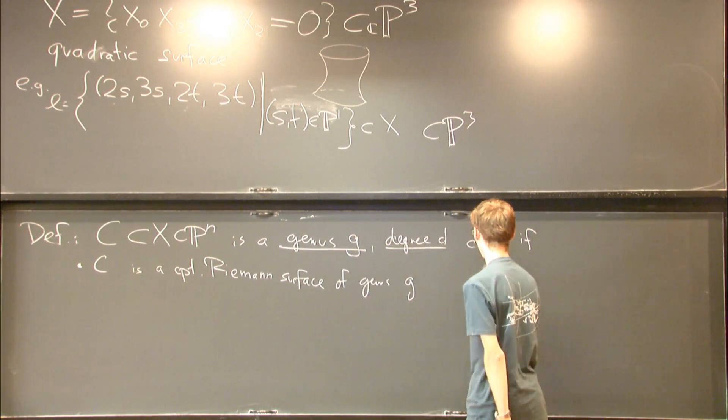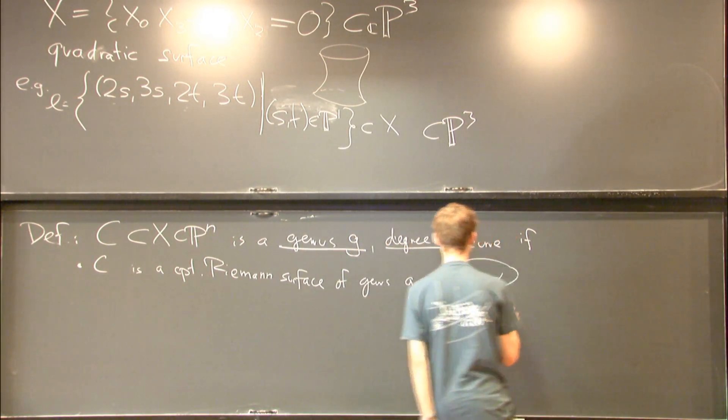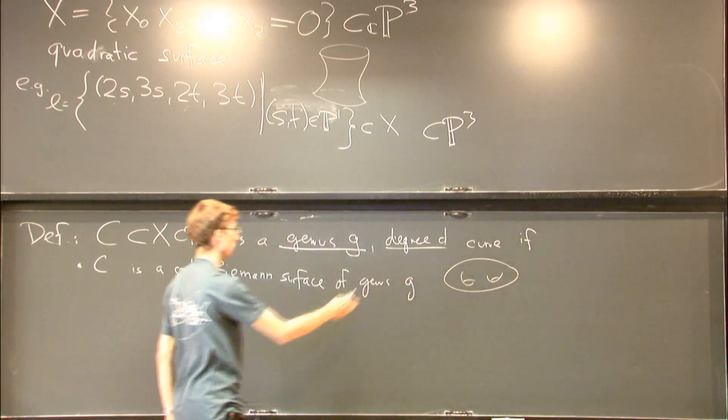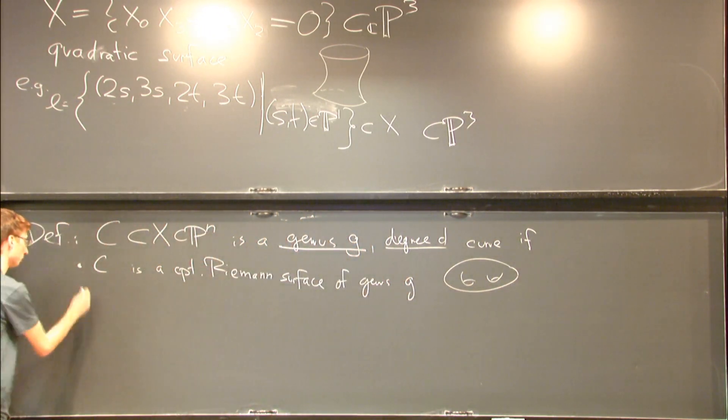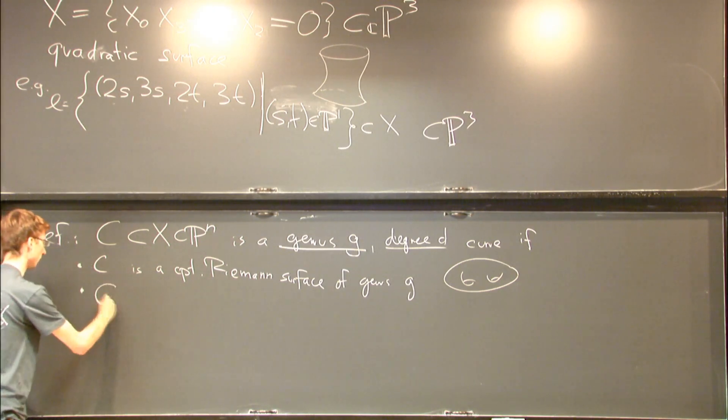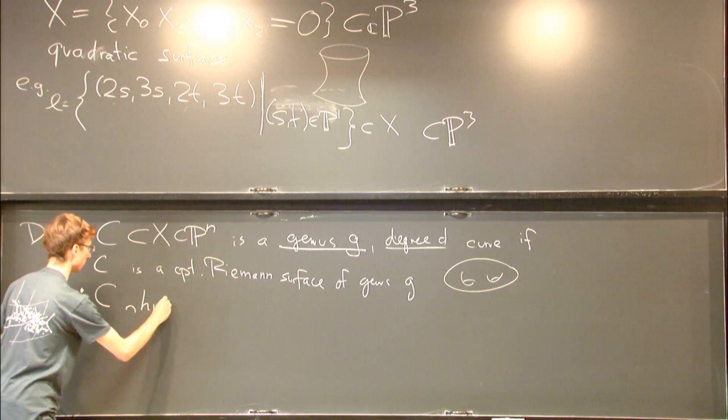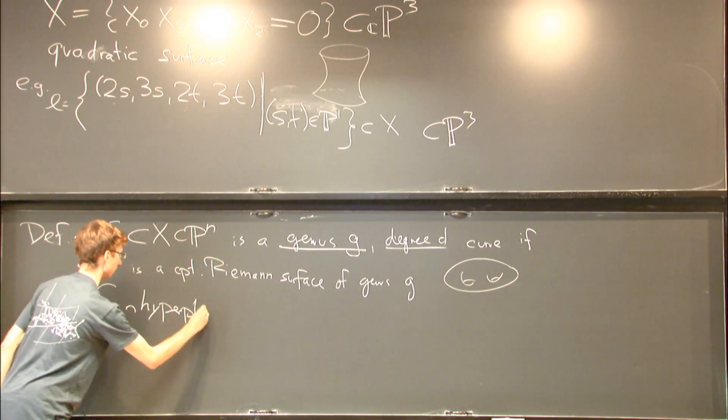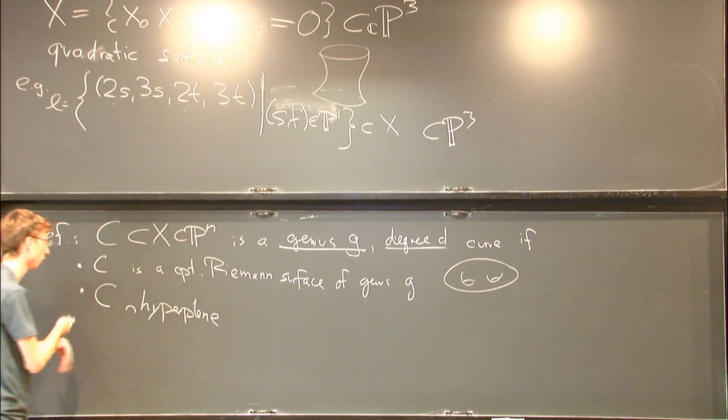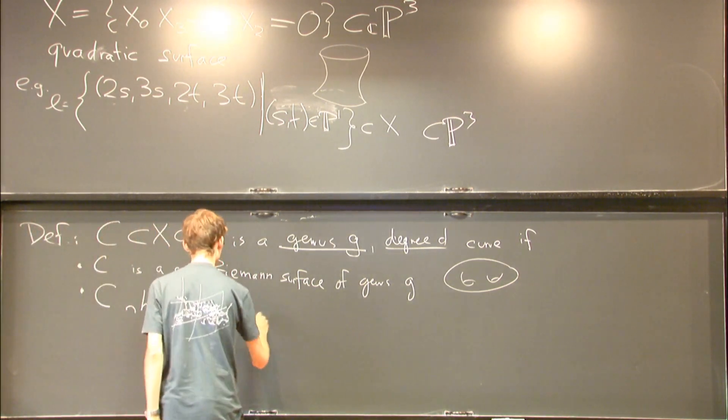Which means just if you look at the corresponding surface, it's the number of holes. So this would be a genus 2 Riemann surface. The degree means if you take this curve inside the projective space and intersect it with a hyperplane, you expect to get a finite number of points. This is how many points you get.